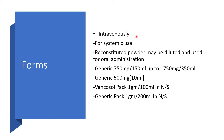Forms: it can be used intravenously for systemic purposes — reconstitute the powder and dilute it. For IV use, generic form is available at 750 mg per 150 ml up to 1750 mg per 350 ml. Generally 500 mg in 10 ml is also available. The brand Vancozyv Pack is one gram per 100 ml in normal saline, and generic pack one gram per 200 ml in normal saline.